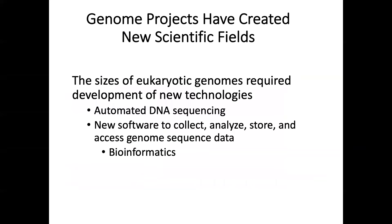All these genome projects created new scientific fields. For example, automated DNA sequencing was needed, since Sanger sequencing was too slow to handle such a large volume of sequencing work. New software and algorithms were also needed to analyze genome sequencing data. These are what bioinformatics scientists do, and we usually call bioinformatics work as dry lab work, in contrast to wet bench work in the lab.